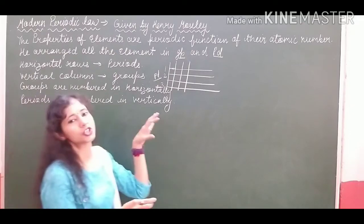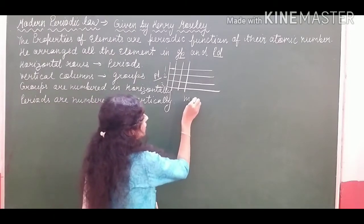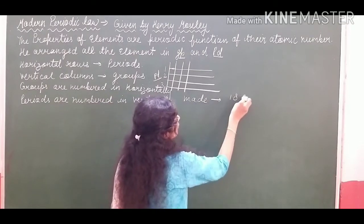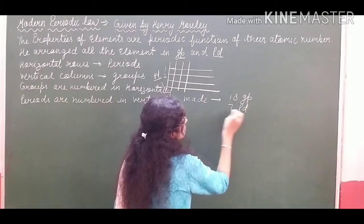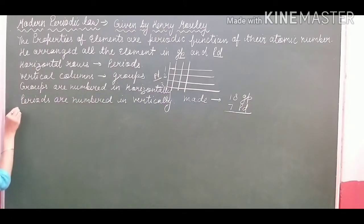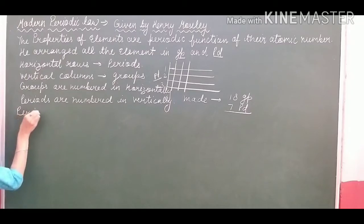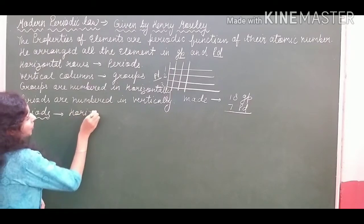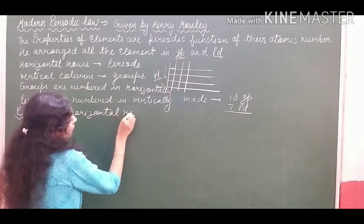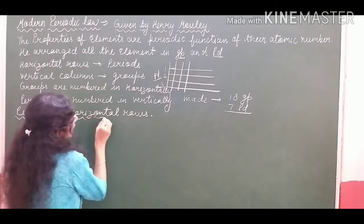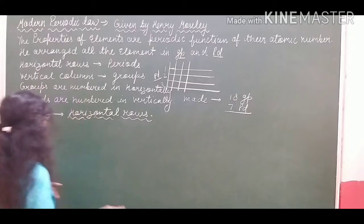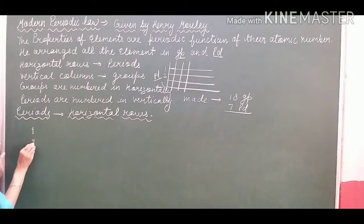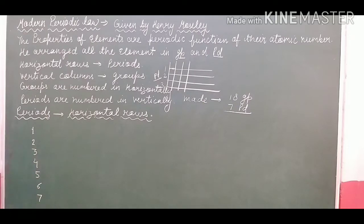Actually when he was arranging all the elements, he made 18 groups and 7 periods. The topic I am picking here is periods. Periods, as I have taught, are horizontal rows. He made 7 periods: 1, 2, 3, 4, 5, 6 and 7 — 7 periods were there.